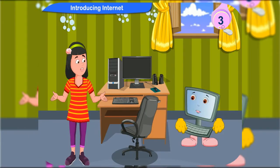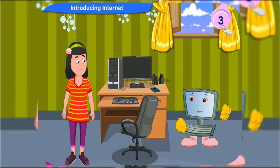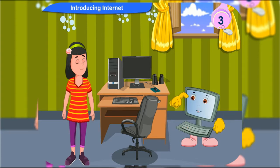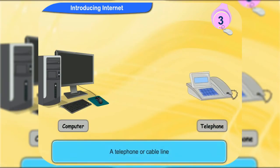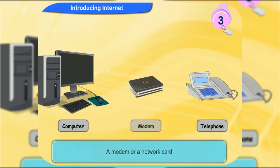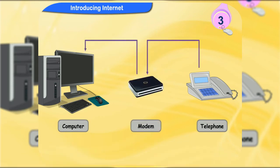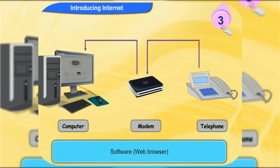What do we need for an internet connection? The following things are needed for an internet connection: a computer, a telephone or cable line, a modem or a network card, software or web browser, and a company providing internet connection.